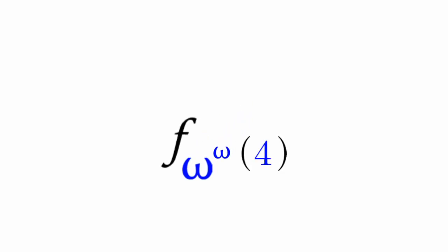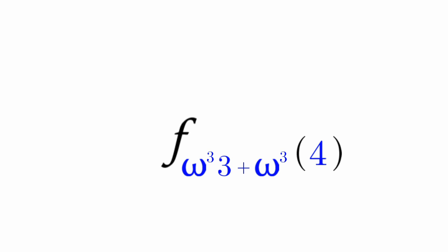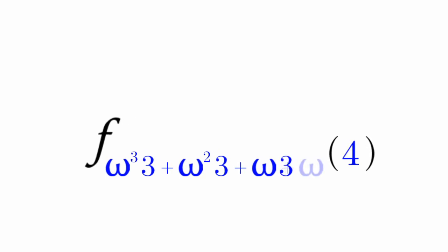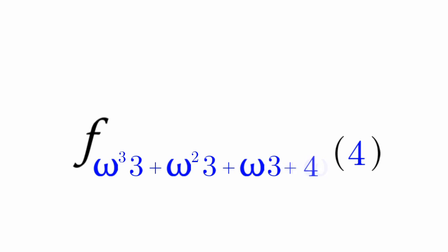Let's have F(omega^4). That turns into omega to the 4th, which breaks down into omega cubed times omega. The closest omega turns into a 4: omega cubed times 4. You turn omega cubed times 4 into omega cubed times 3 plus omega cubed. Then omega cubed turns into omega squared times 4. Omega squared times 4 turns into omega squared times 3 plus omega squared. Omega squared then turns into omega times 4. And finally, omega times 4 turns into omega times 3 plus omega, where the closest omega turns into a 4. This is how intense F(omega^omega) is.